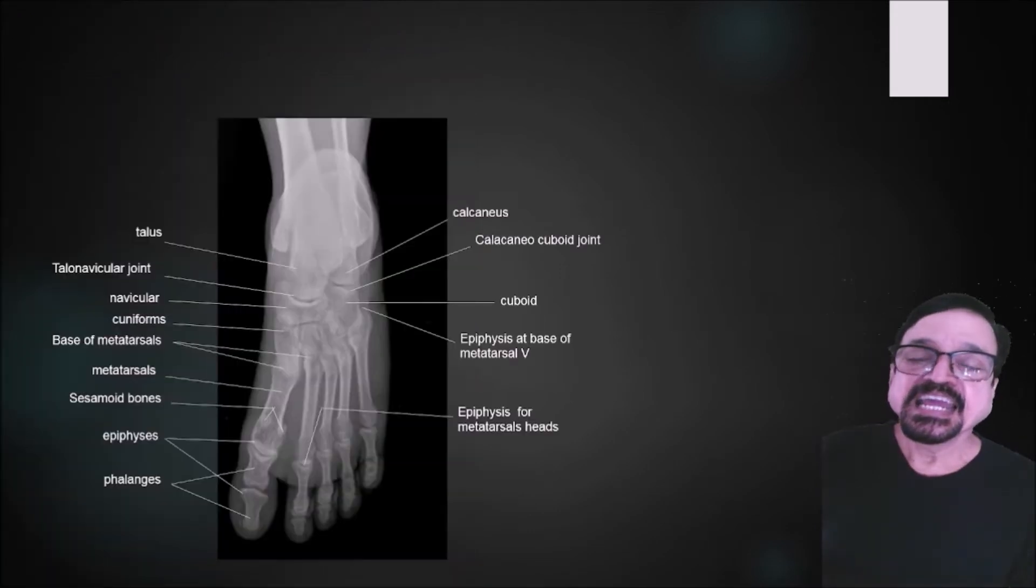First was open collimator, that was wrong. Second was an opposite angulation. Now we are going for AP projection. In AP projection we never go for angulation, so angulation should not be taken in AP unless we are seeing the metatarsal bone.